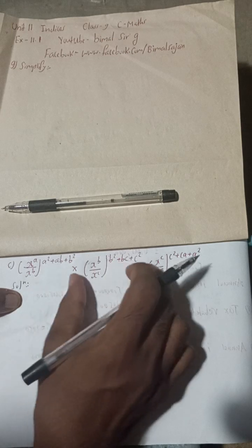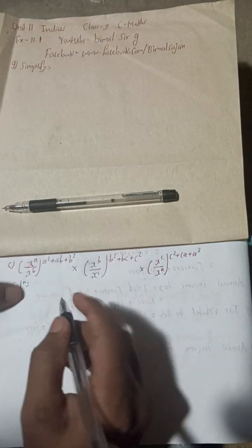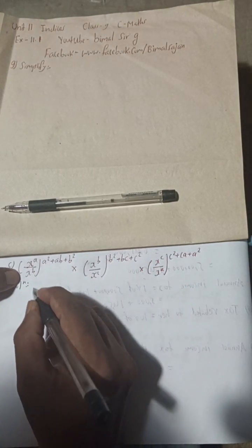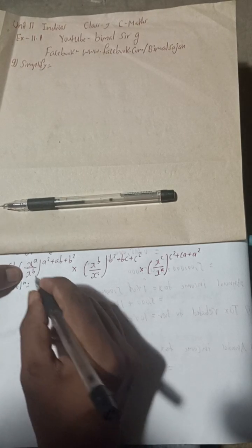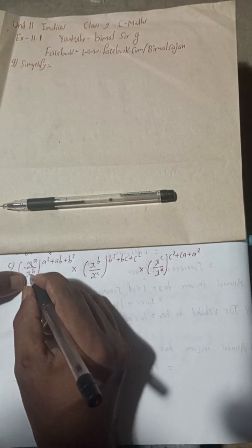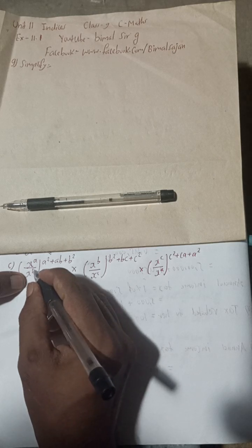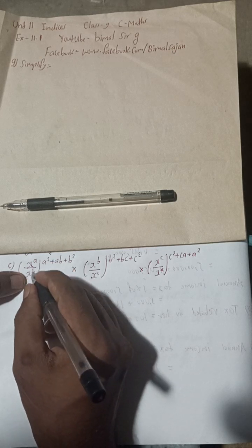Now this is here (x^a / x^b). I will not write this. One line you can write, and after that, this will be written as x to the power a and x to the power minus b.